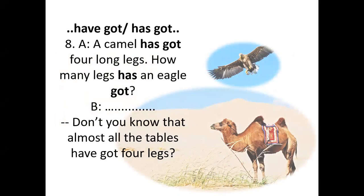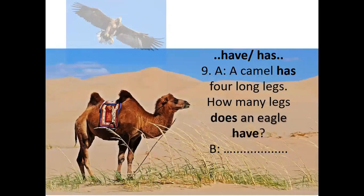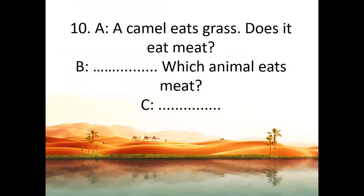It's a fact that almost all tables have got four legs. A camel has four legs — or without 'got': a camel has four legs. How many legs does an eagle have? An eagle has two legs. A camel eats grass and plants. Does it eat meat? No, it doesn't eat meat. Which animal eats meat? A cat eats meat. A lion eats meat.